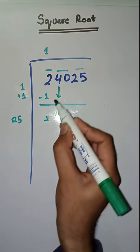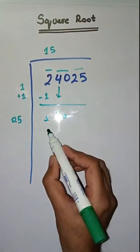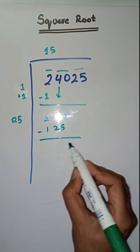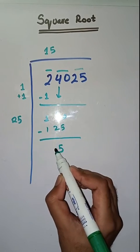We will take the number 5. 25 times 5 is 125. Minus, we do subtraction: 10 minus 5 is 5, 3 minus 2 is 1.